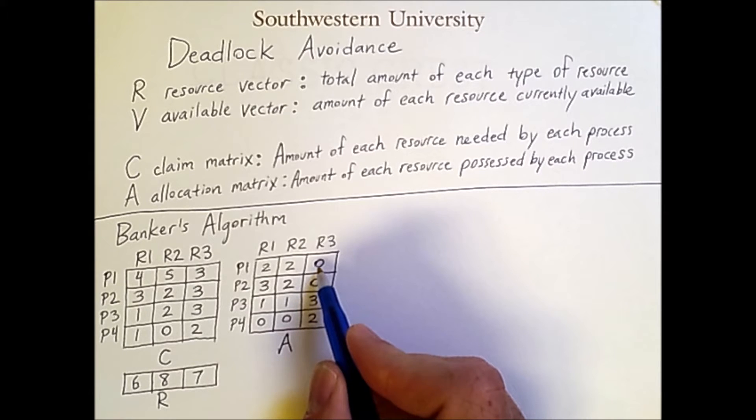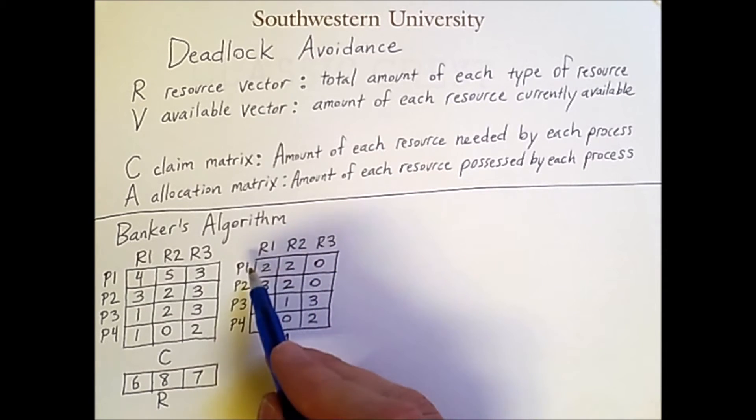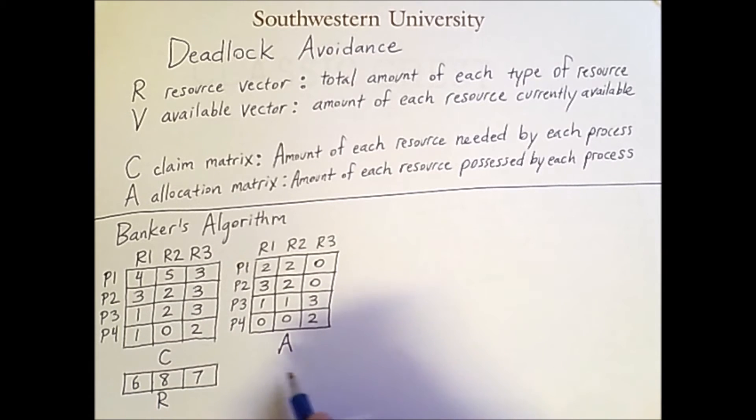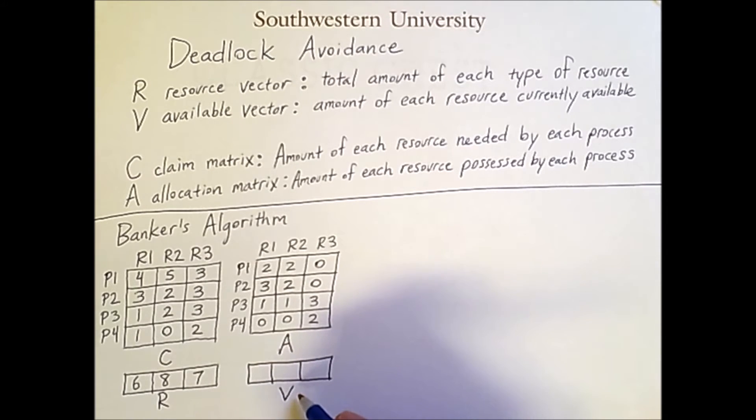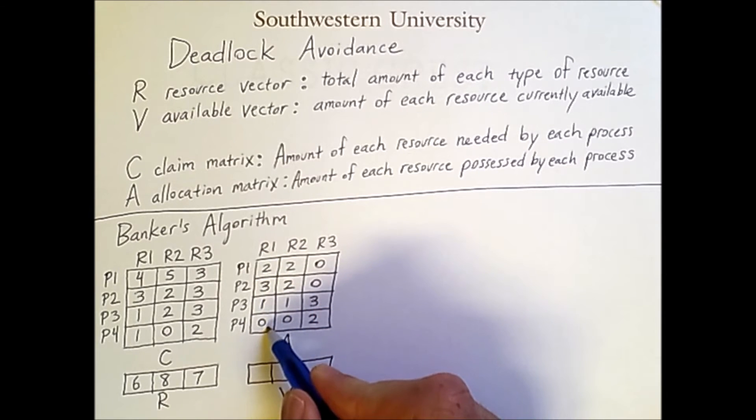So something that will be important in determining which process to execute first is seeing how many more units of resource can be claimed by a process. So this process currently has 2 units of resource type 1, but it eventually needs 4. Now, something that I haven't drawn yet is the available vector. So this vector V represents the units of each resource type that are currently unclaimed in the system. And we can actually compute this based off of R and A.